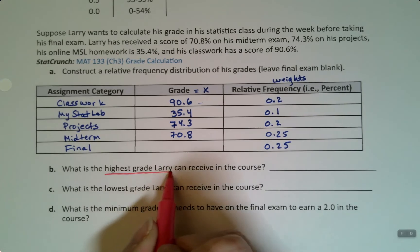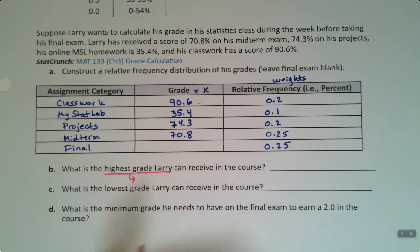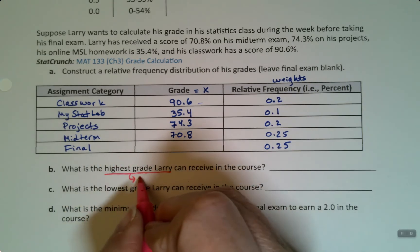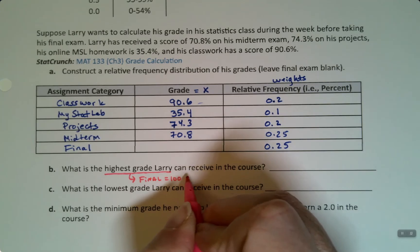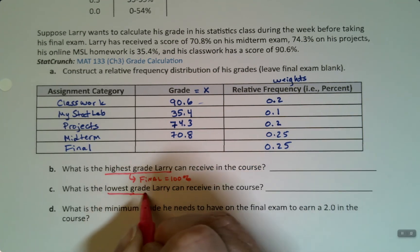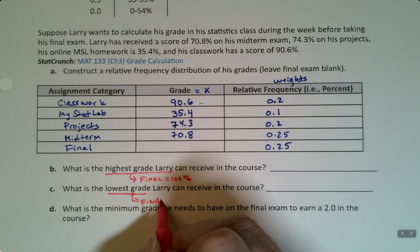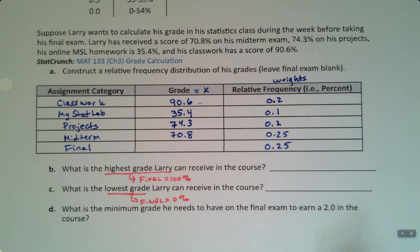We want to think about the highest and lowest grade possible for Larry. The highest grade, now keep in mind this is before the final, would be to give Larry a final exam of 100%. And the lowest grade would be to give Larry a final grade of zero, like they never show up for that exam.